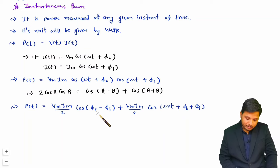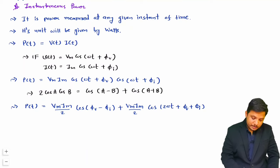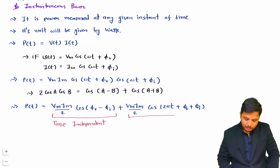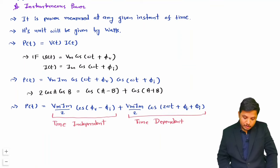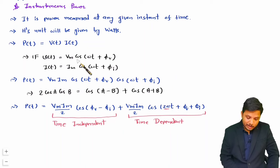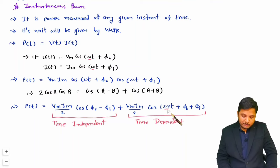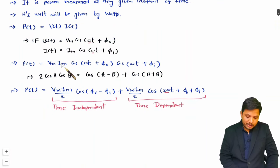Observe these two terms carefully. The first term, (Vm·Im/2)·cos(φV − φI), is independent of time. The second term, (Vm·Im/2)·cos(2ωt + φV + φI), is time-dependent. Notice the second term has frequency 2ω, while voltage and current have frequency ω. So the frequency of instantaneous power is twice the frequency of voltage or current — an important point for competitive examinations.